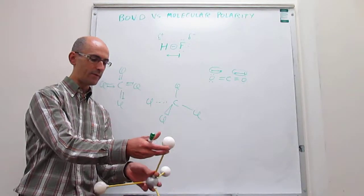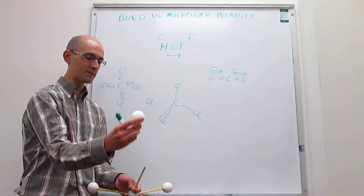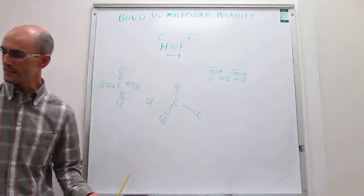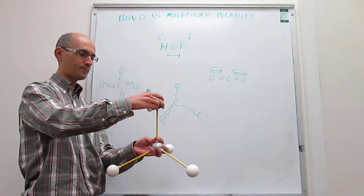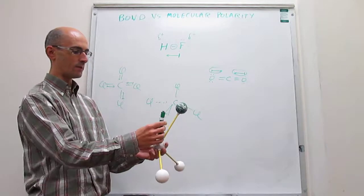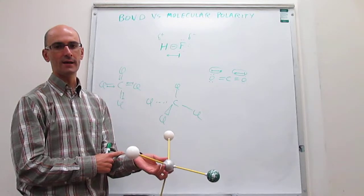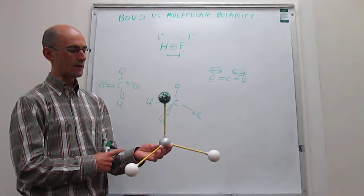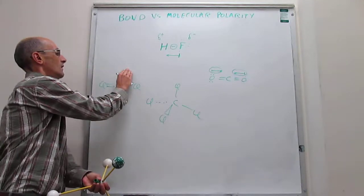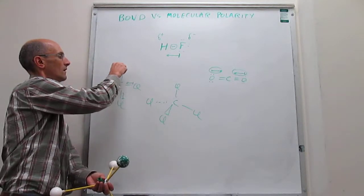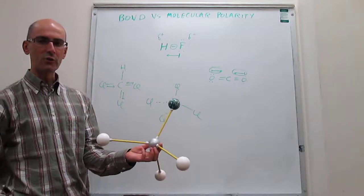To explore this further, we can replace one chlorine atom with a different atom. If this was originally carbon tetrachloride, we can now make it chloroform — CHCl3 — by replacing one chlorine with a hydrogen. The question is: is this molecule now polar?